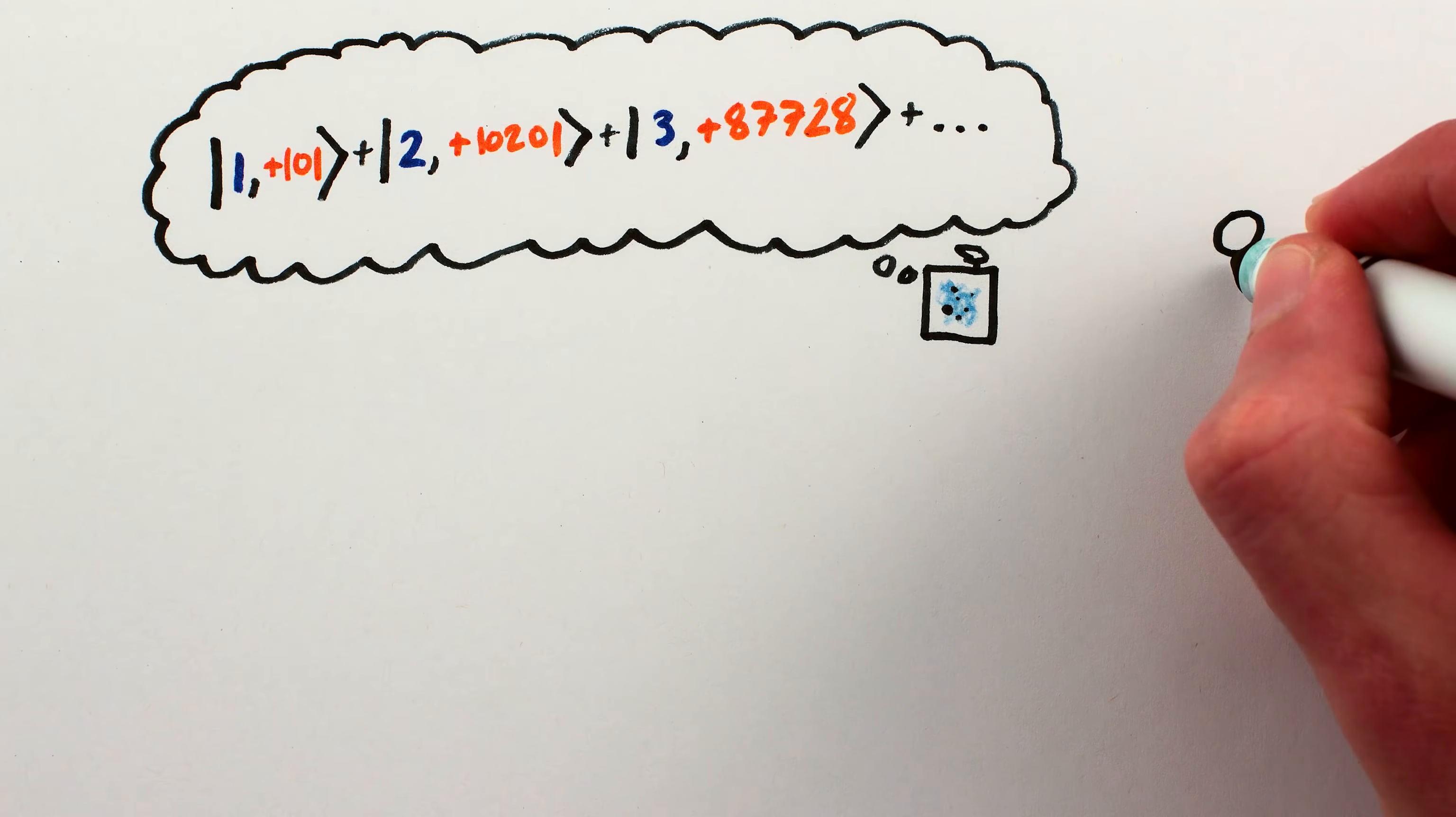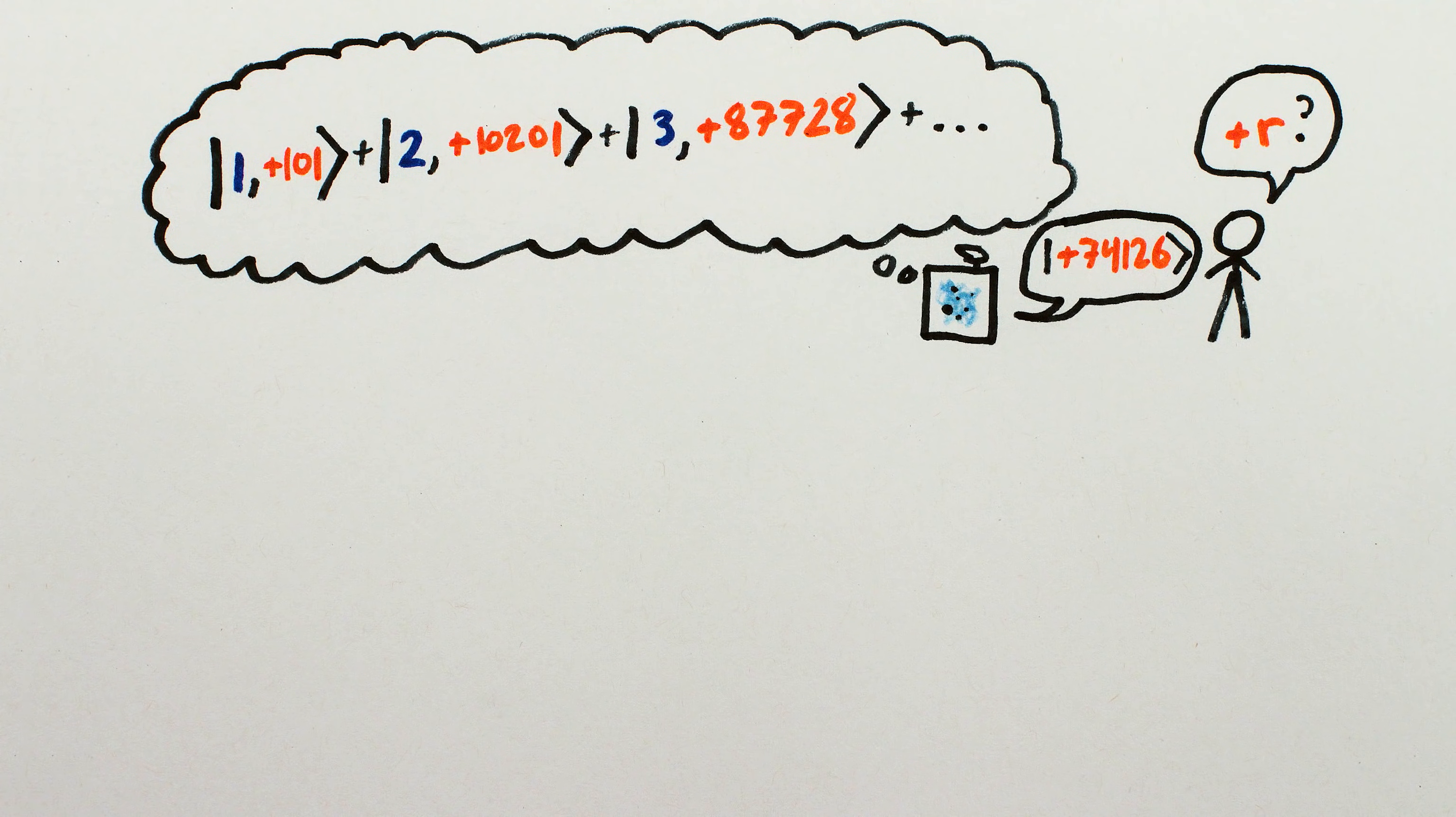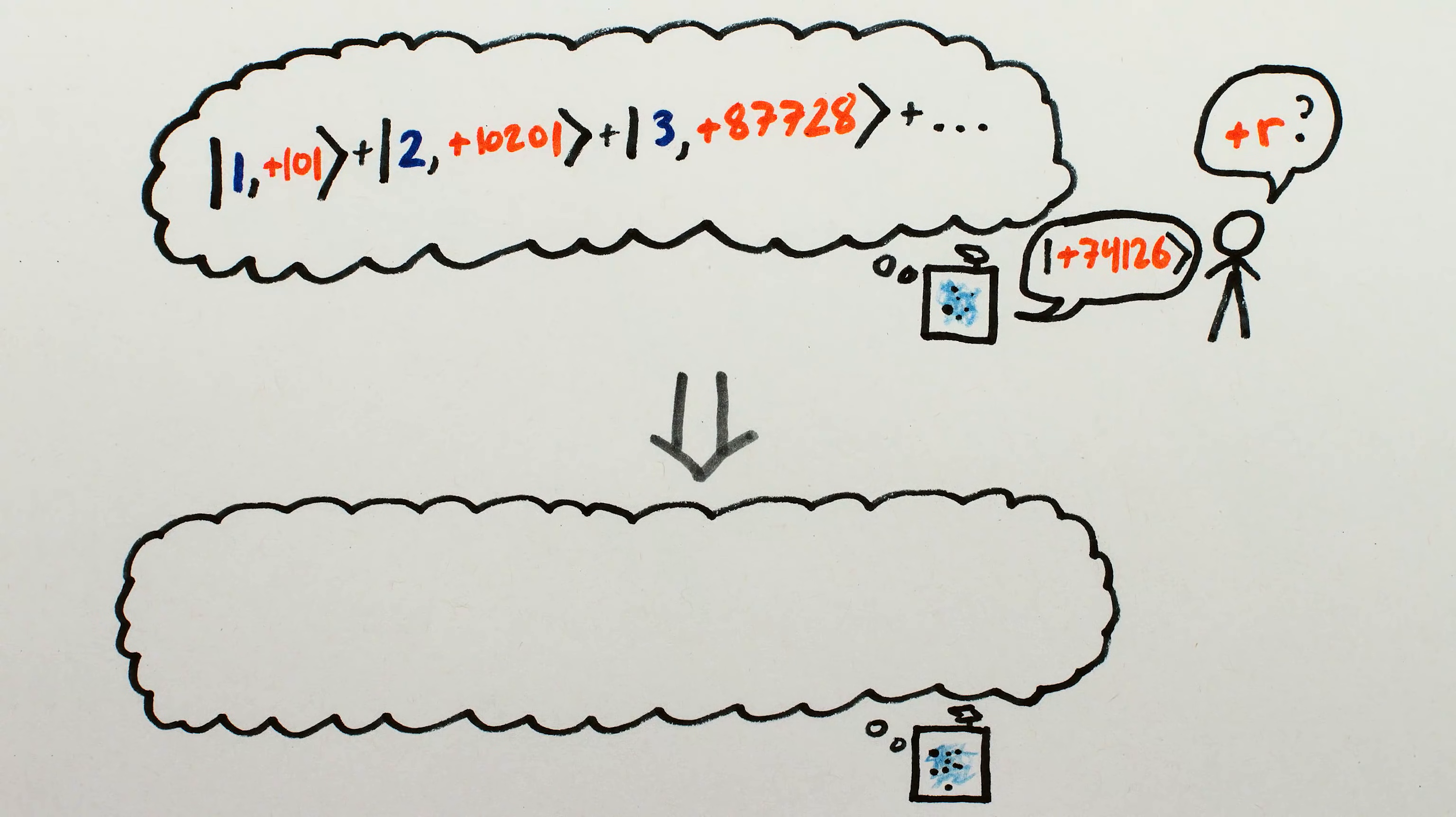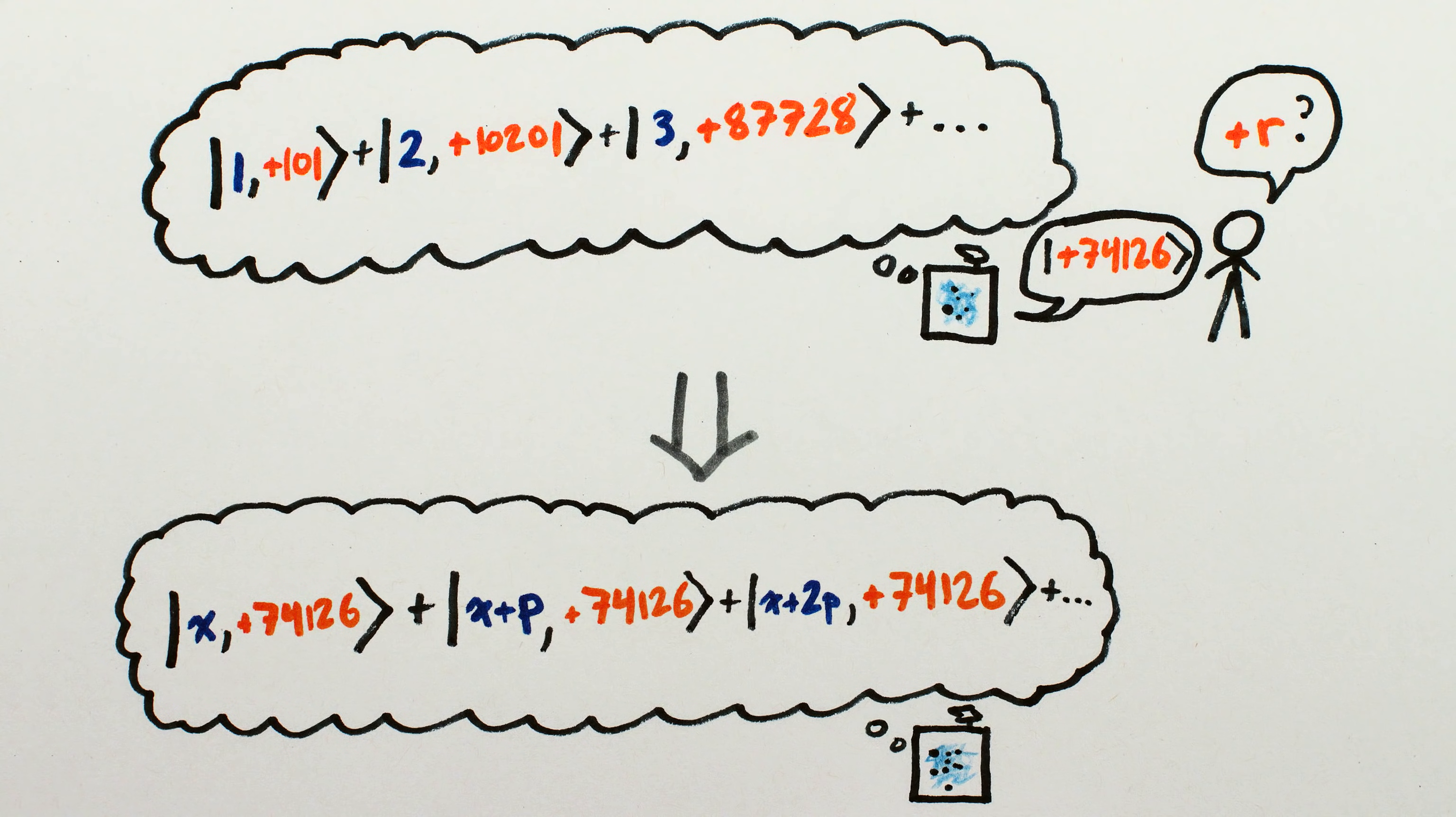So we measure just the state of the remainders, and we'll get one remainder as an output, say, 74126, from which we know that the rest of the quantum state is left in a superposition of the possible powers that resulted in the remainder 74126, which must all be p apart from each other. I explained why in the other video.